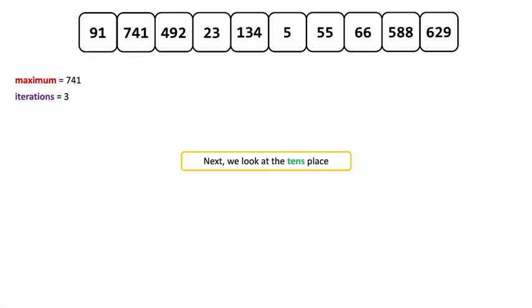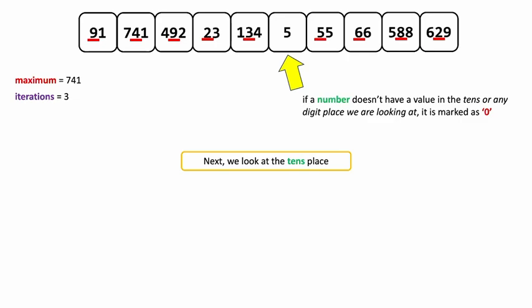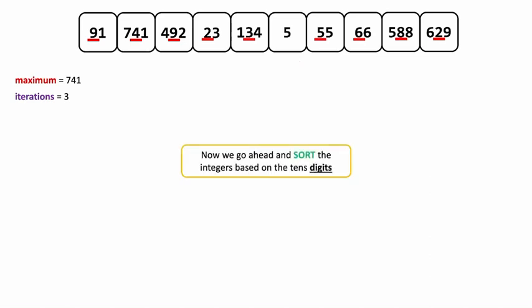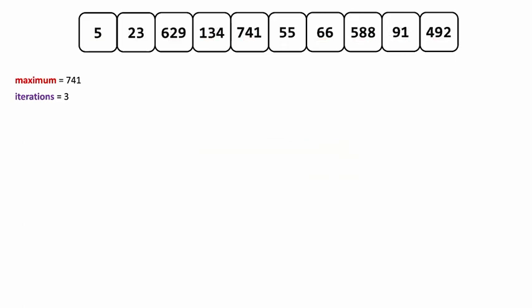The next iteration we're going to look at the tens place. For instance, this will be the 4 in 741, the 3 in 134, and the second 8 in 588. But look at the 5 — there is no digit in the tens place. If a number doesn't have a value in the digit place you're looking at in this iteration, it's considered zero. So when we sort the 5 in this iteration, we're going to pretend that digit has a zero. We then sort all of these integers based on the tens digit. The 5 is definitely going to be first, then we have the 2 in 23, but 629 is still before 134 because the 2 in the tens place was less than the 3 in 134. But that was just the second iteration — we have one more to go.